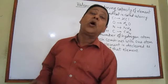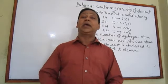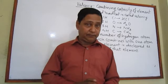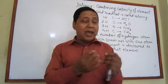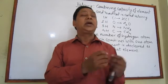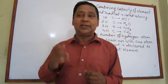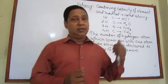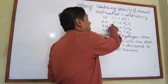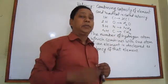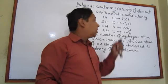The valency of all other elements is declared with respect to hydrogen — that is, by comparing those elements with hydrogen. When we take one atom of an element and combine it with hydrogen, the number of hydrogen atoms that combine with that one atom of the element is declared as the valency of that element.